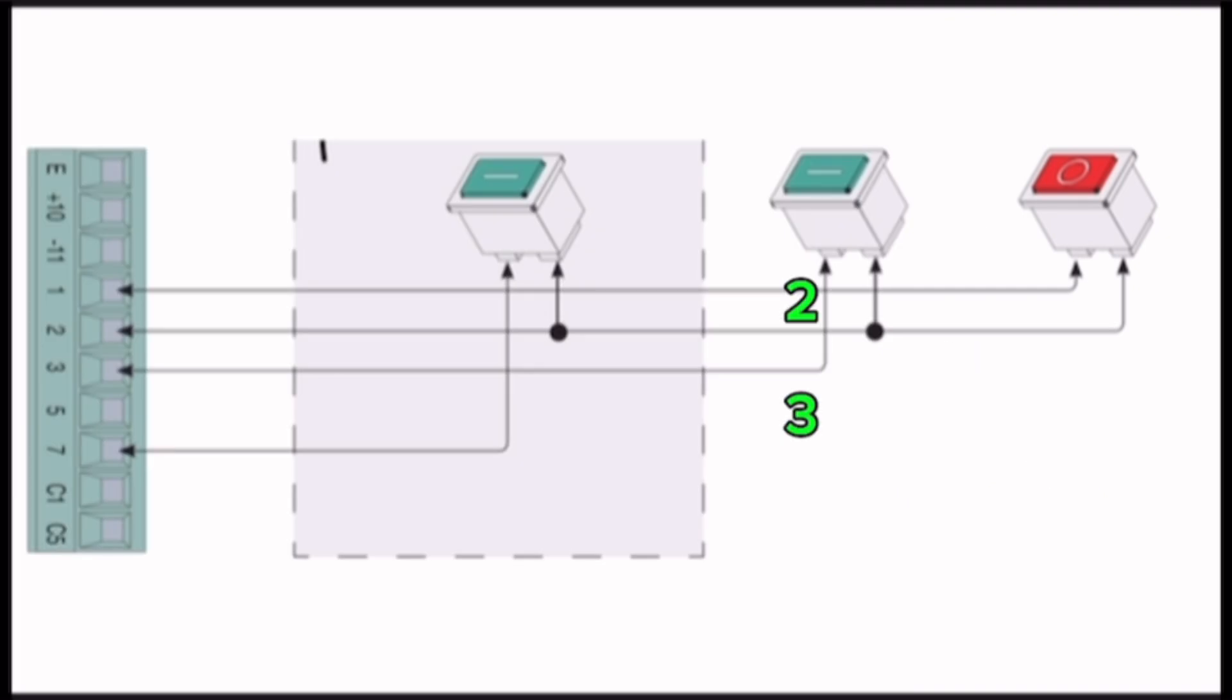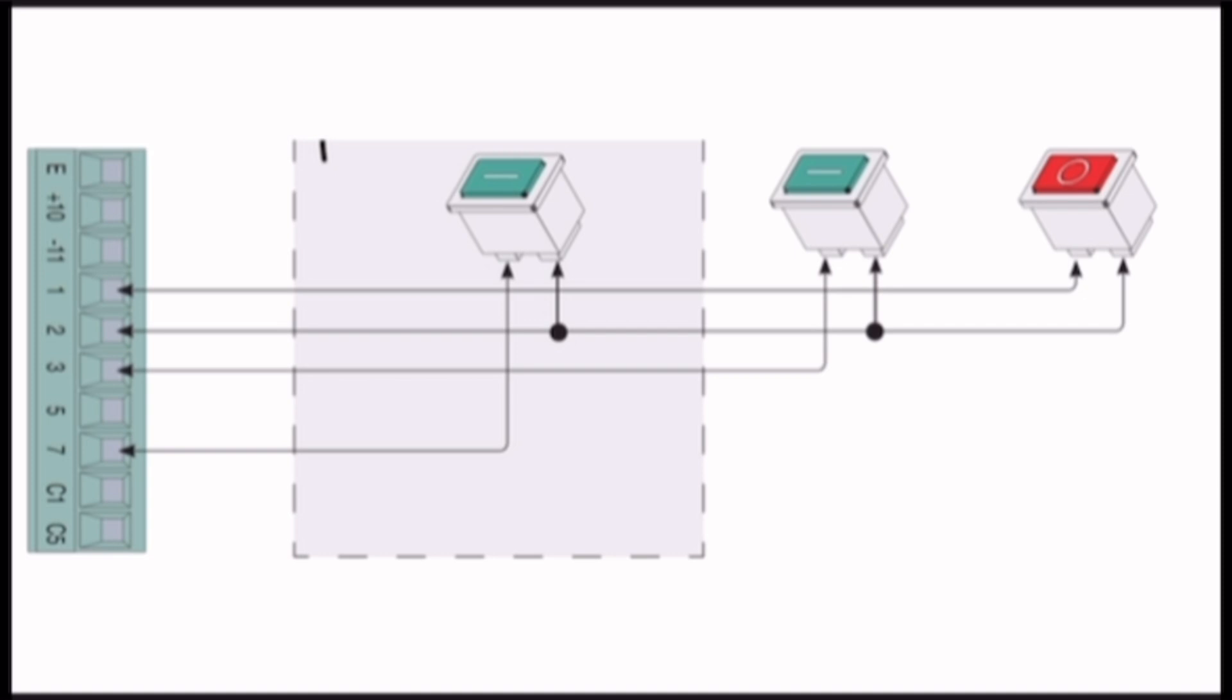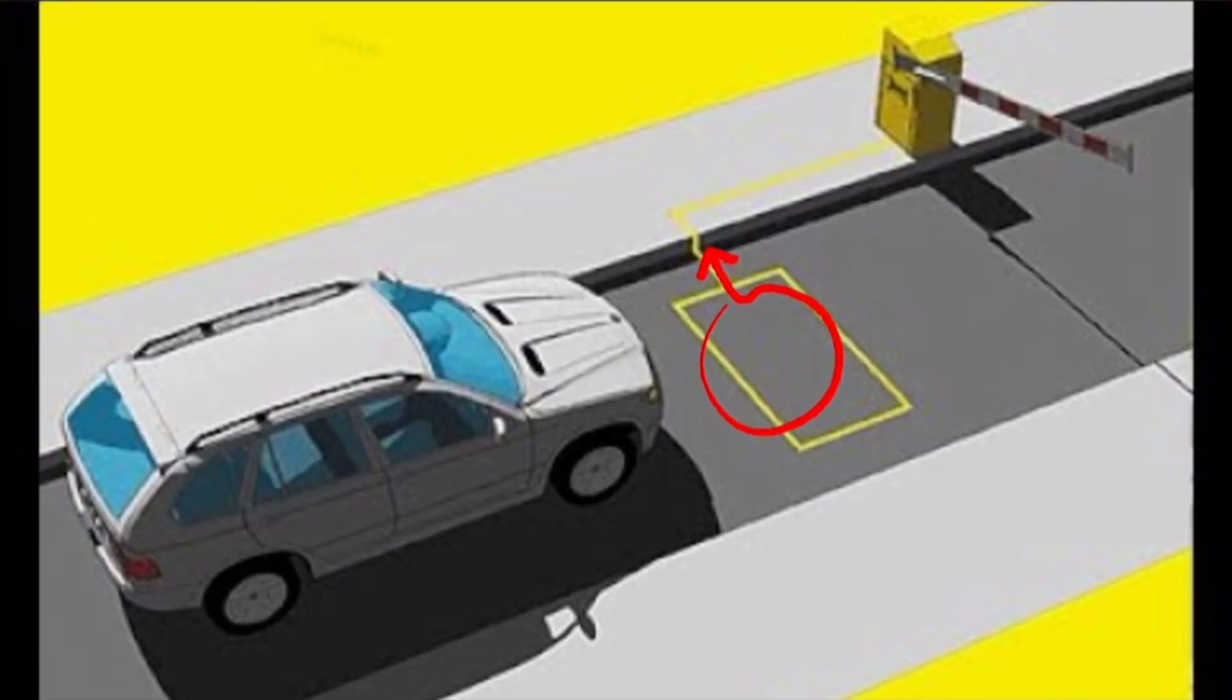Terminal 3 and Terminal 2 are open button for door open. Mostly this contact is used for loop detector. When car enters loop area, the loop device detects the car and gives signal to control and arm opens. After car passes, the arm closes automatically.